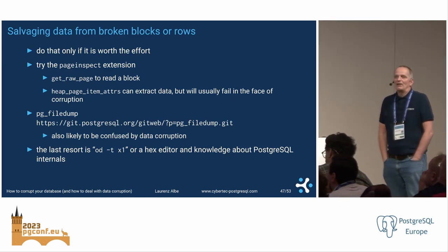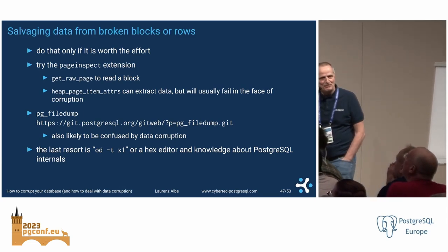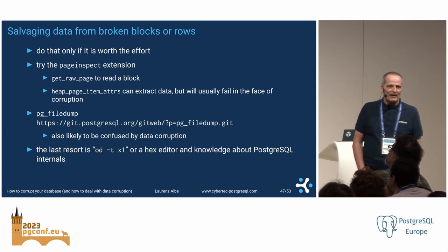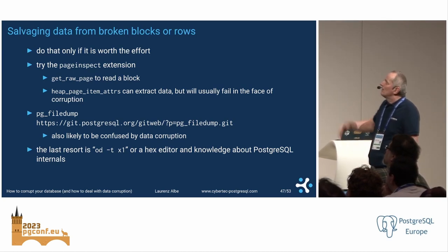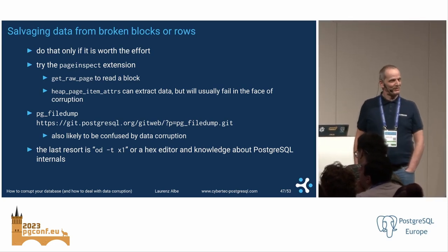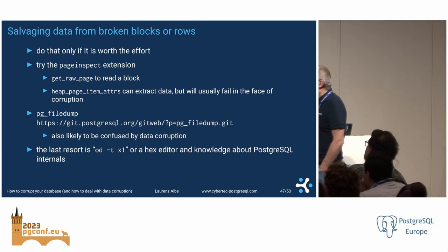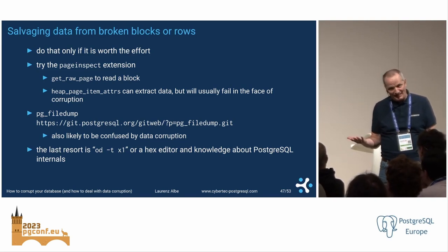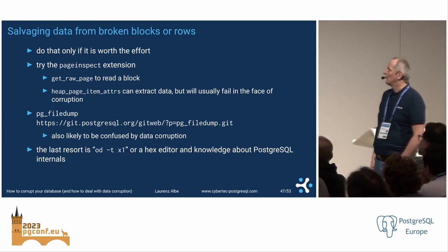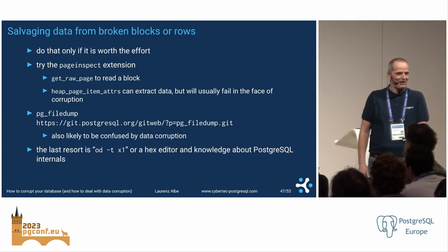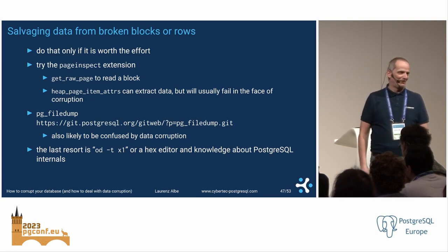I've been talking about deleting rows and zeroing out blocks — they might contain valuable data. But digging into a broken block to salvage data is really painful. Normally you have to extract the page — the pageinspect extension is useful there. You can get the 8KB page out and see what you find. There are methods like heap_page_item_attrs to read data out of a block, but if the data are broken it will probably also fail. The same with pg_filedump. Very likely you'll have to look at binary data and read Postgres headers to figure out what's salvageable.